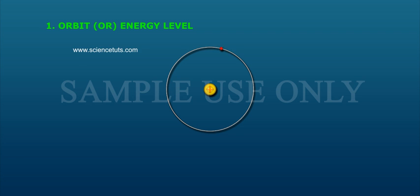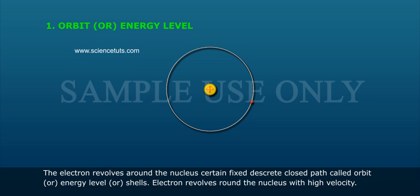Orbit or energy level: The electron revolves around the nucleus in a certain fixed discrete closed path called orbit, or energy level, or shell. Electron revolves around the nucleus with high velocity.